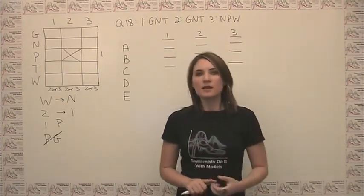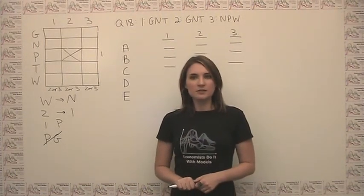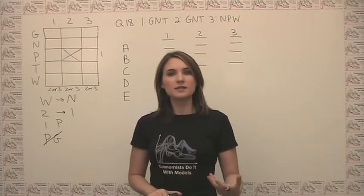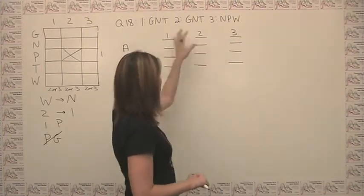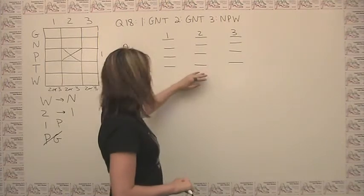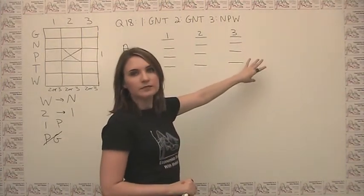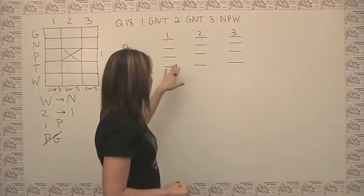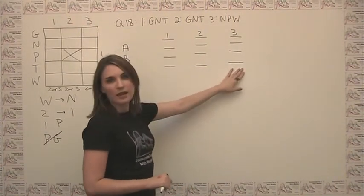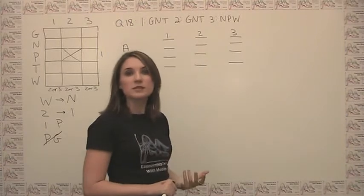So the question says, If each recycling center in Rivertown recycles exactly three kinds of material, so I drew a little visual that you can put right next to the question in your test book to give us something to look at. So, okay, well, we have three materials here, here, and here.